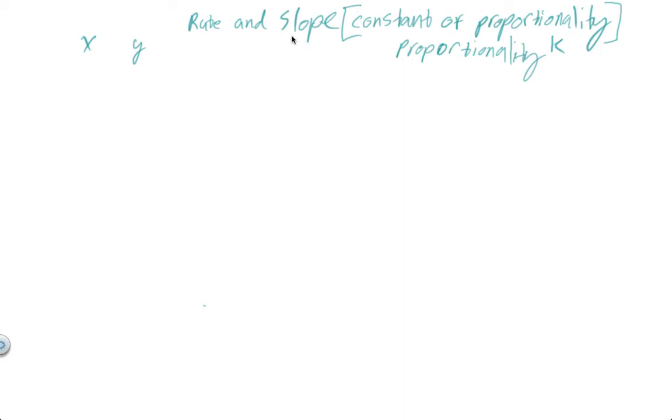Rate and slope are referring to any graph. It doesn't have to be proportional, or it doesn't have to pass through the origin. It will still be a straight line, though. So we can talk about, and we're really just going to talk about slope.